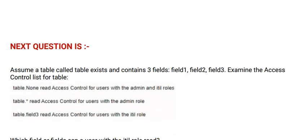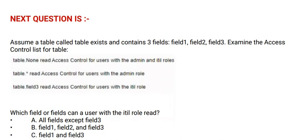Next question: Assume a table called TableExist that contains three fields — Field 1, Field 2, and Field 3. Examine the access control list for the table. Which field or fields can a user with the it-ill role read?